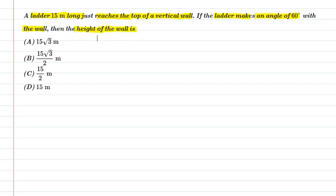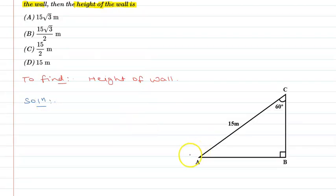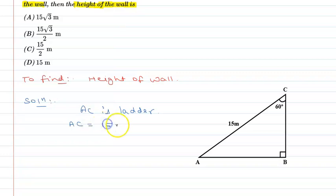So let's start. We need to find the height of the wall. Let's make a diagram. So I have made a diagram. AC is the ladder, and AC is equal to 15 metres. And BC is the wall.